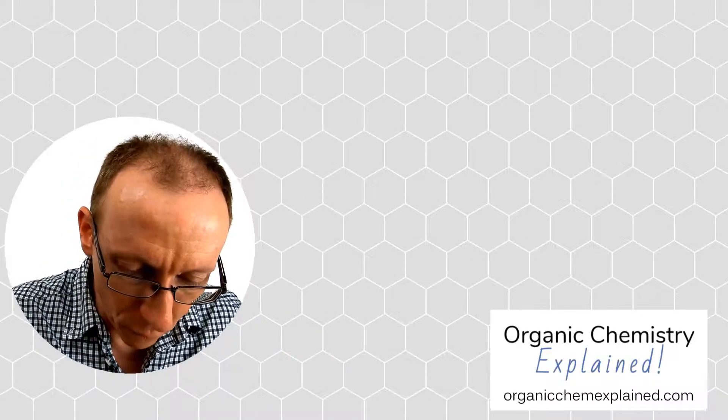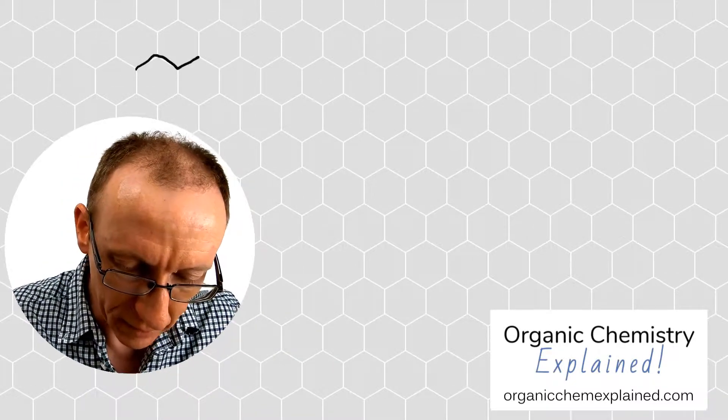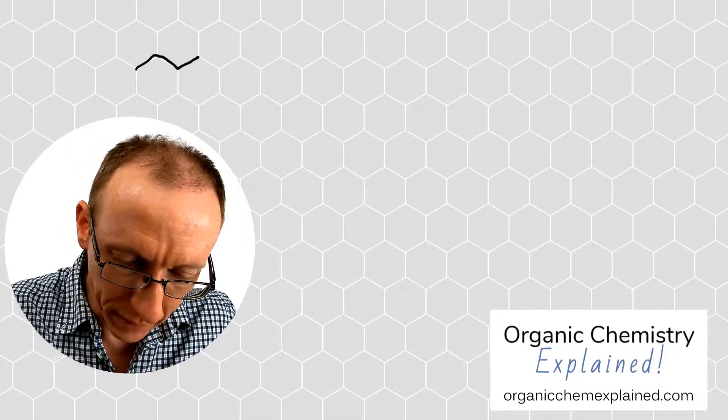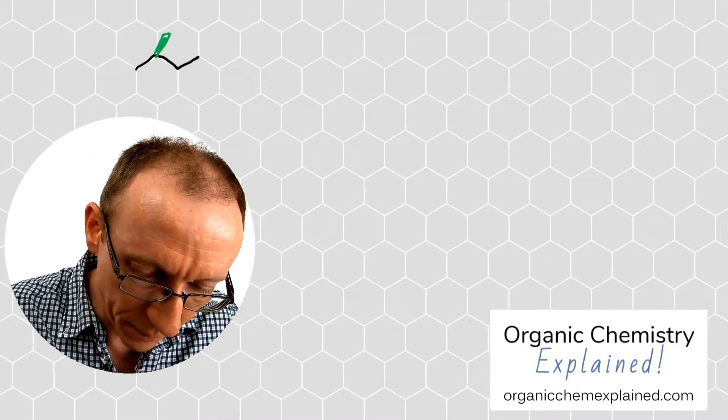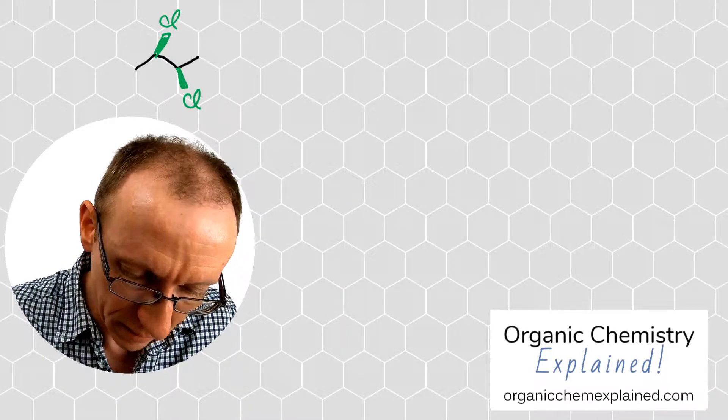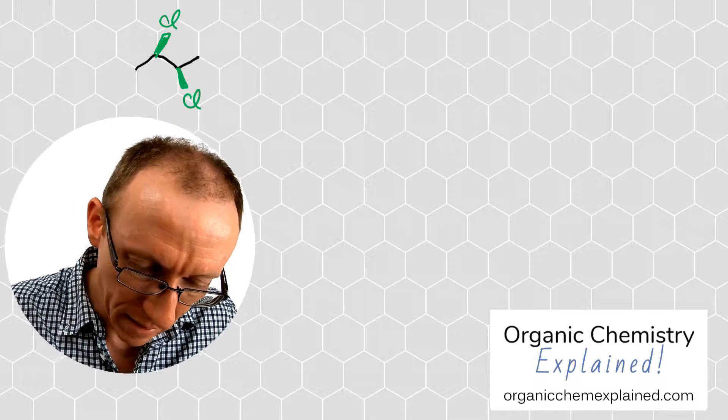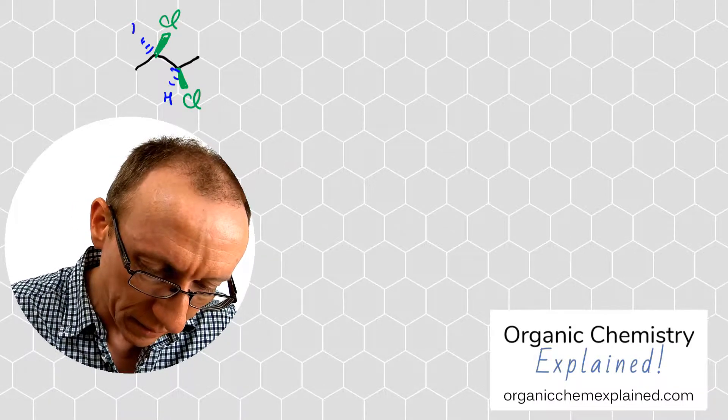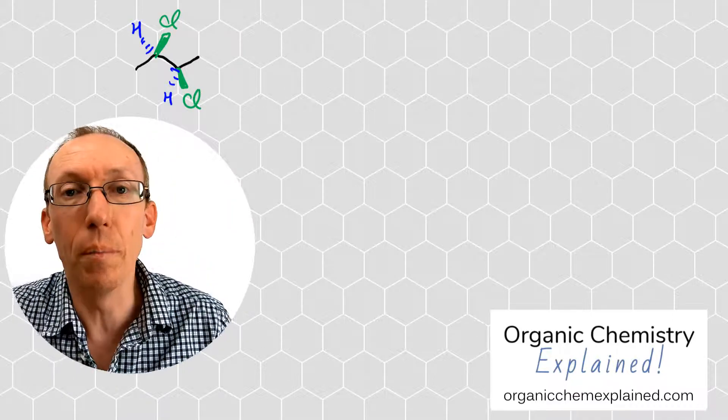We're going to draw out a four carbon chain, a butyl chain or butane, and we're going to have two chlorine groups that are coming up towards us, towards the viewer, from this chain. So those are two chlorines and we're going to have two hydrogens that are going away from us that I'll draw in blue.